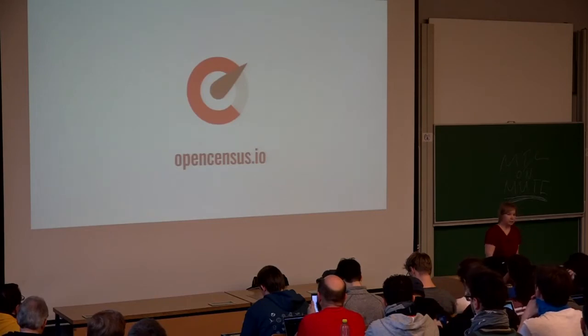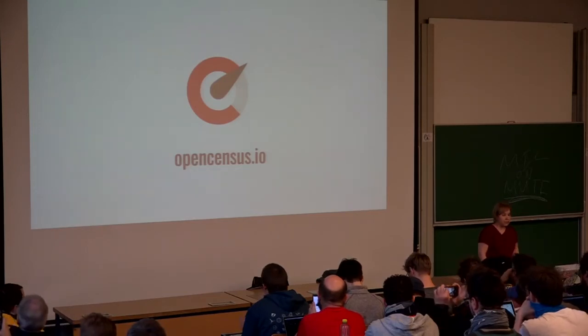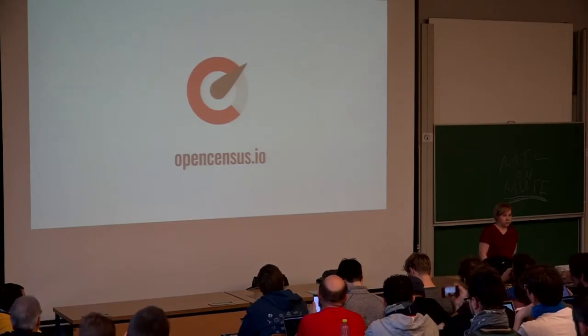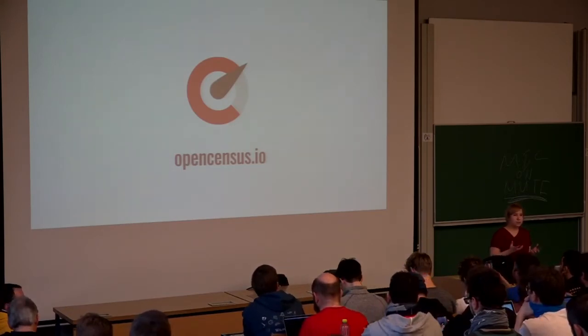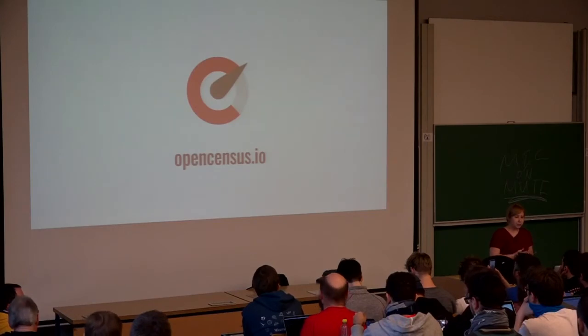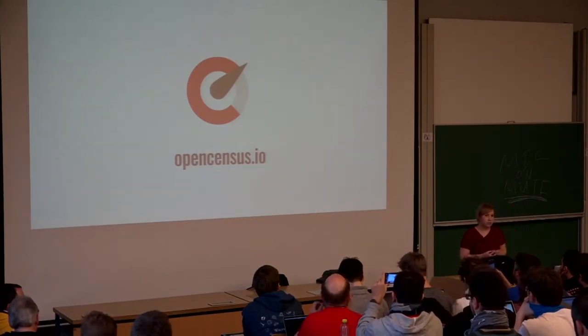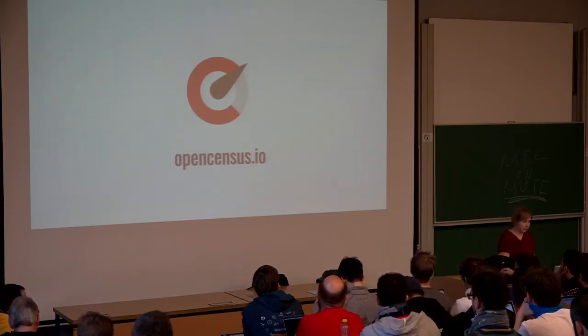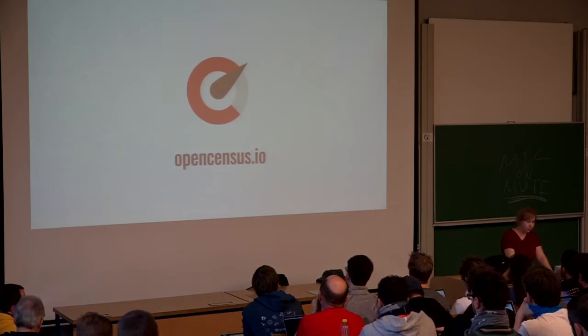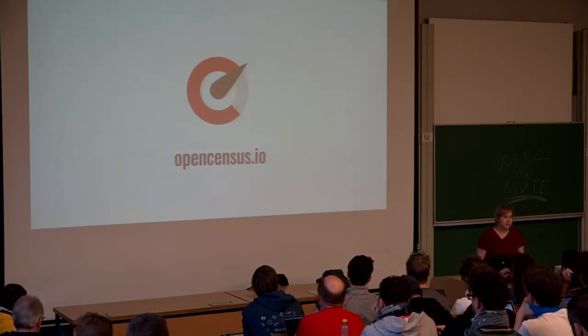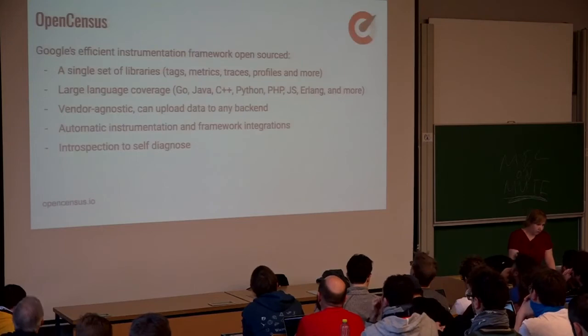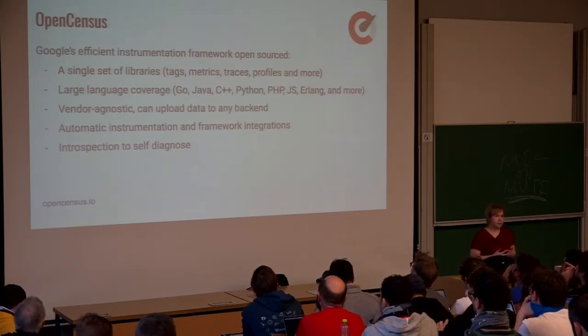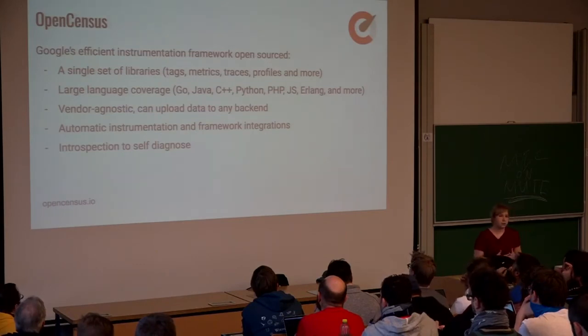Recently we announced our project, OpenCensus, which is a holistic instrumentation framework. It is inspired by Google's internal project called Census. The main reason we are open sourcing this is we want to fill that missing building gap in the open source world. We want libraries, frameworks, and all sorts of infrastructure projects to be able to instrument without having to reinvent these concepts. We also want to help other organizations to adopt these solutions. And if they are not, they can also use OpenCensus as a reference. So OpenCensus provides a single set of libraries. We have tags, metrics, traces, and more is coming in the future.